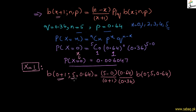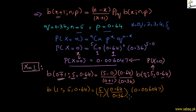Substituting into the recurrence formula: we have n equal to 5, p equal to 0.64, and x equal to 0. The numerator gives n minus x equal to 5, and dividing p by q and multiplying by P(X = 0). After simplification and calculation, P(X = 1) equals 0.053751.